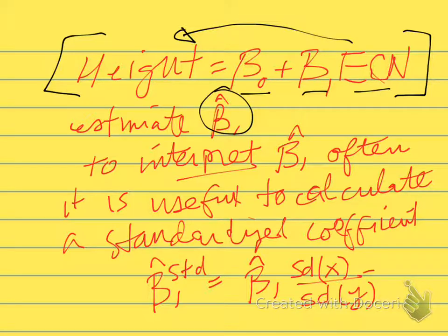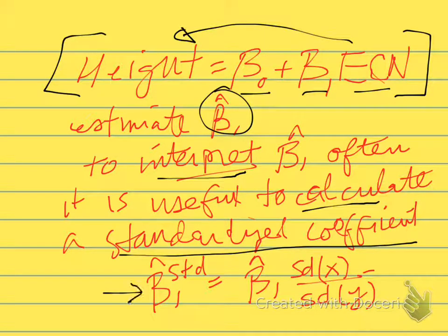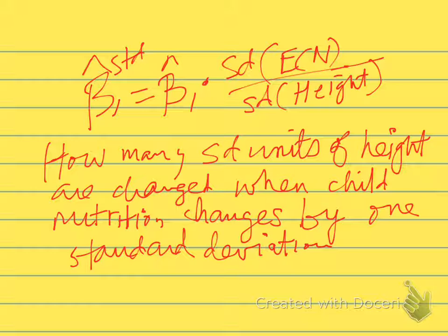When we actually go to interpret beta1 hat, it's often useful to calculate a standardized beta coefficient, and we define the standardized beta coefficient to be the estimated coefficient times the standard deviation of the x variable divided by the standard deviation of the y variable. In this case, the standardized coefficient would be beta1 hat times the standard deviation of early child nutrition, which is the x variable, divided by the standard deviation of height, which is the y variable.